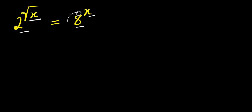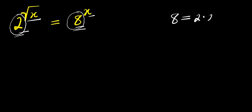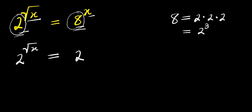Whenever you have an exponential equation like this, ensure that the bases are the same. Here we have 2 and here we have 8. I can simply express 8 as 2 times 2 times 2, meaning 8 is 2 to the power of 3. So I have 2 raised to the power of square root of x, equals 2 to the power of 3, raised to the power of x.